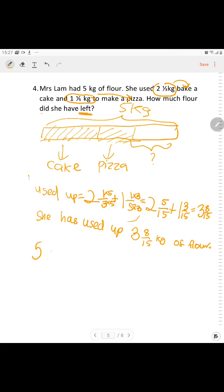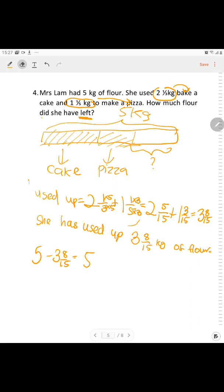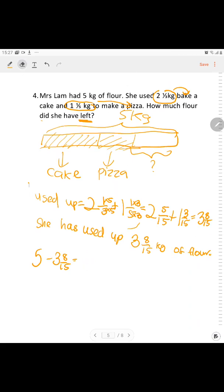So, 5 whole minus 3 and 8/15. To subtract a mixed number from a whole number, convert 5 to 4 and 15/15. Then 4 and 15/15 minus 3 and 8/15 gives 1 and 7/15.